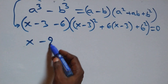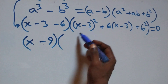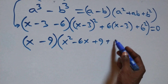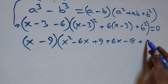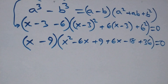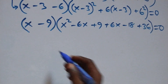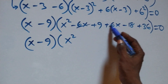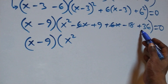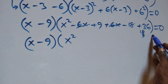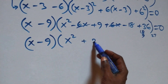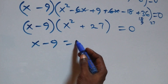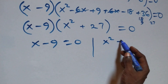That is (x minus 9) into brackets, then open bracket: expanding gives x squared minus 6x plus 9, plus 6 times (x minus 3) which opens to plus 6x minus 18, plus 36, close brackets, equals 0. Collecting terms: minus 6x and plus 6x cancel; 36 minus 18 plus 9 gives 27. So we have (x minus 9)(x squared plus 27) equals 0. Two possible cases: x minus 9 equals 0, or x squared plus 27 equals 0.